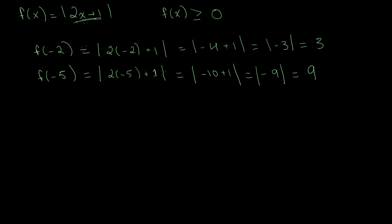For f(2), we write the absolute value of 2 times 2 plus 1, which equals the absolute value of 4 plus 1, equal to the absolute value of 5, which is equal to 5.